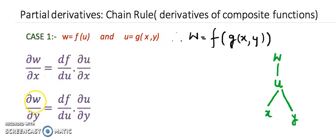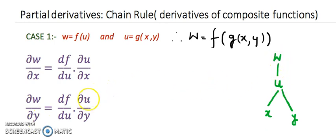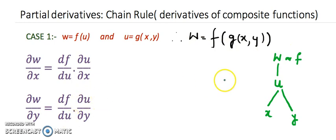Similarly, we can find del w by del y. Again go to the diagram: w depends upon u, so write df by du, and then u and y gives del u by del y. With the help of an example, let's see how to use the chain rule in this particular kind of case.